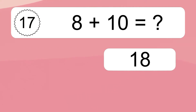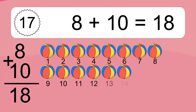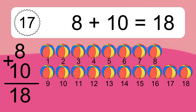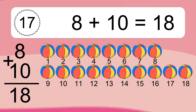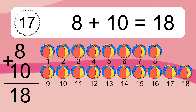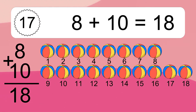8 plus 10 equals what? 8 plus 10 equals 18. Let's count it: 1, 2, 3, 4, 5, 6, 7, 8, 9, 10, 11, 12, 13, 14, 15, 16, 17, 18.